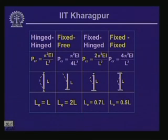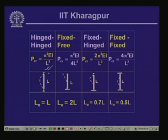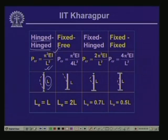Let us look at the critical load values derived by Euler for different column support conditions. For an idealized column with hinged ends of length L, Euler's critical load is P_cr = pi²·E·I / L². When the lower end is fixed and the top is free (cantilever/fixed-free condition), the critical load is P_cr = pi²·E·I / (4L²).